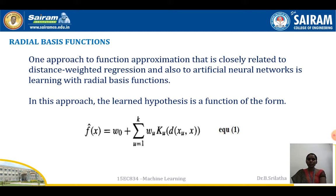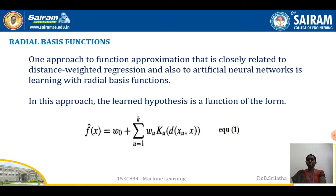Already in the previous lecture, we discussed distance weighted regression and also artificial neural networks in the previous modules. So this is also similar to that, but in the learning we are going to consider the function as a radial basis function. That is the difference between that approach and this one.